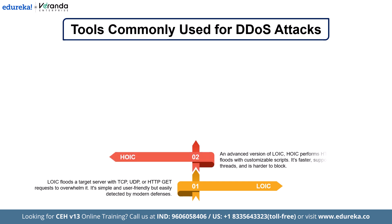The second tool is HOIC, which stands for High Orbit Ion Cannon. HOIC was developed as an upgrade of LOIC. It can generate more traffic at a faster rate and allows users to create custom attack scripts for more advanced attacks. Unlike LOIC, HOIC focuses mainly on HTTP GET and HTTP POST requests. HOIC is capable of launching powerful web-based DDoS attacks and can send up to 250 requests at once, making it much more difficult to detect and block than LOIC.